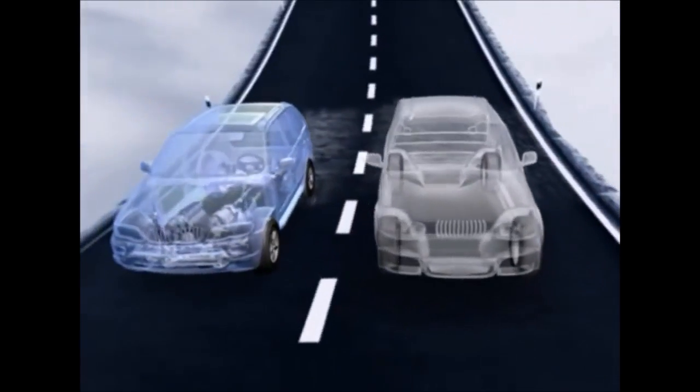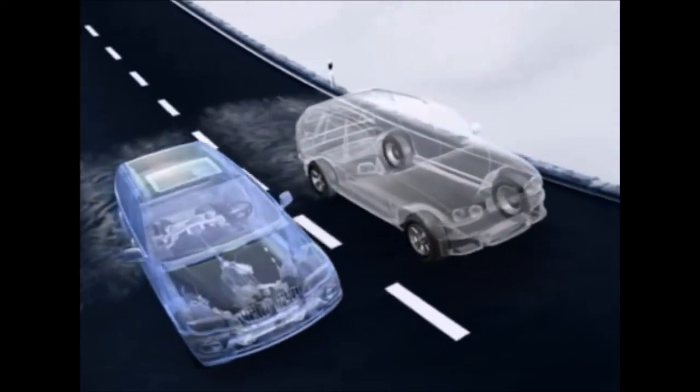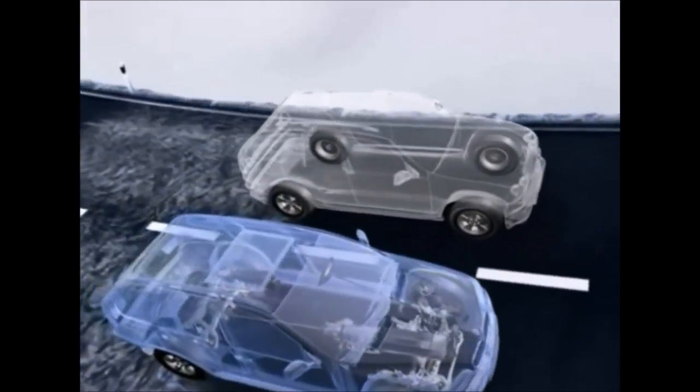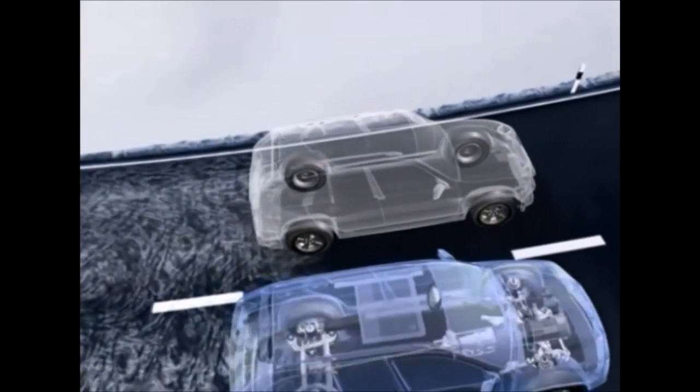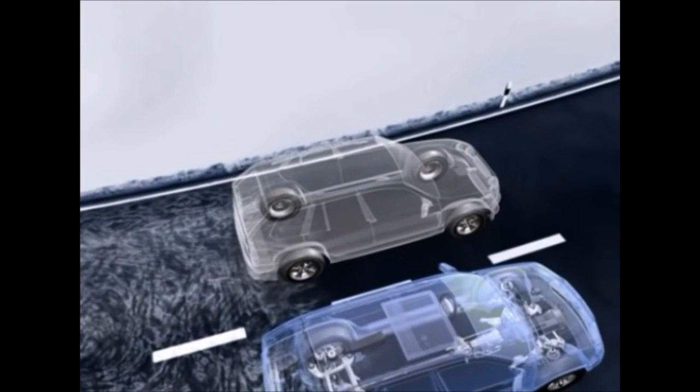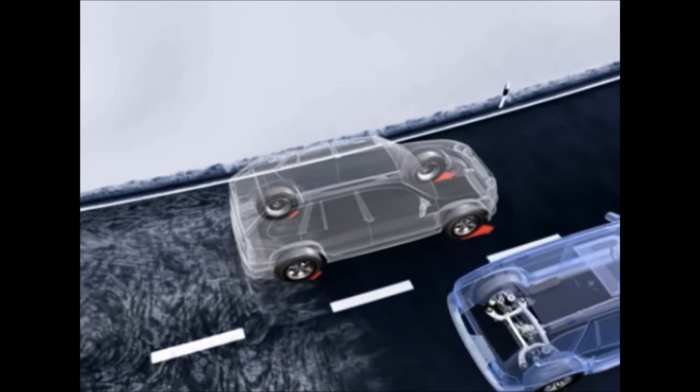A comparison of traction. The blue vehicle has X-Drive. The gray vehicle has a conventional four-wheel drive. Both vehicles need to start off on a gradient, but their rear wheels are on an ice sheet. In the gray vehicle, the rear wheels can't transfer power onto the icy surface.